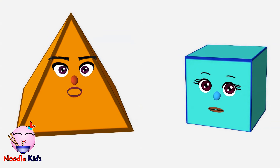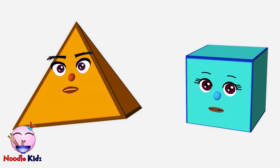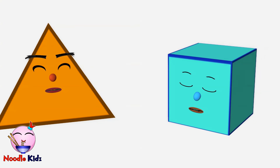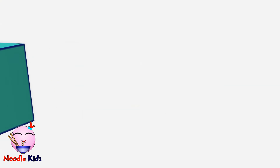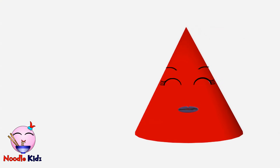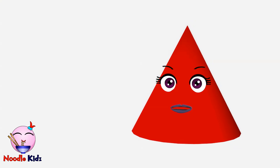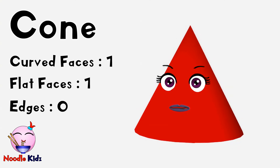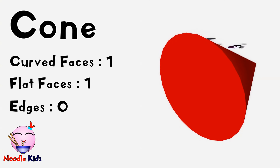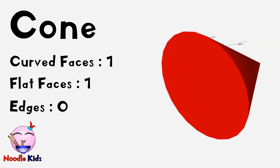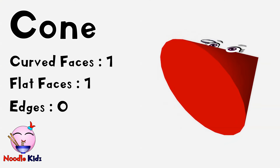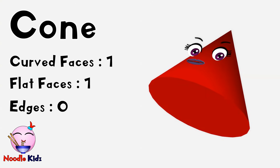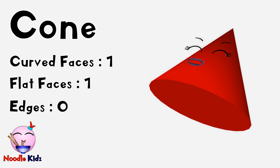Can you help us identify how many faces, edges, and vertices we have? Let's start with me. I have one curved face and a flat surface, but I don't have any edges, which means a cone has one curved face, one flat face, and zero edges and vertices.